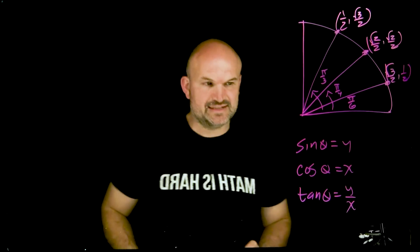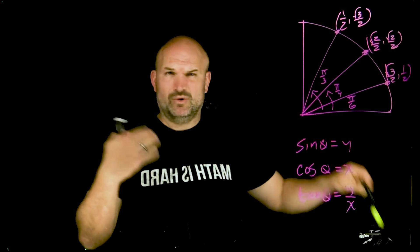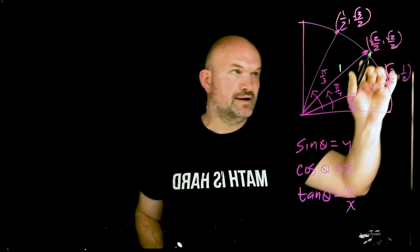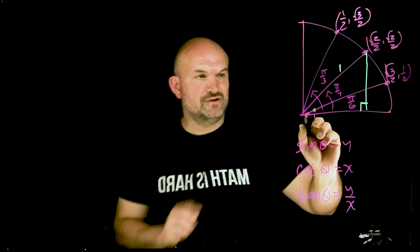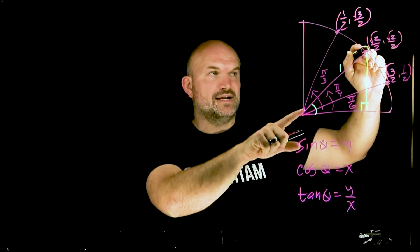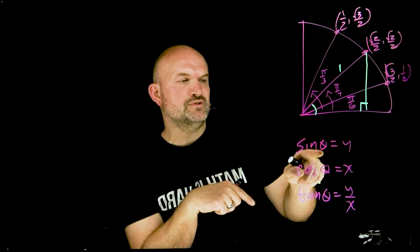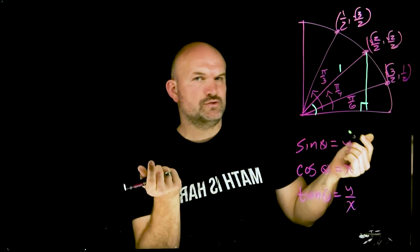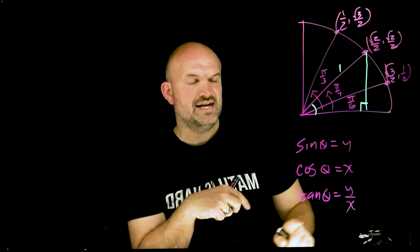A lot of students remember that sine is opposite over hypotenuse and wonder where the y-coordinate comes from. On the unit circle, the hypotenuse equals one. So for an angle like π/4, the y-coordinate is √2/2, and the hypotenuse is 1. Sine of π/4 = (√2/2)/1, which is just the y-coordinate. The same understanding applies to cosine and tangent.